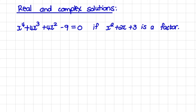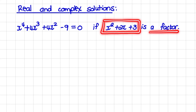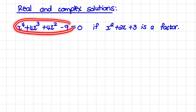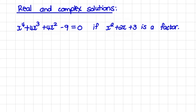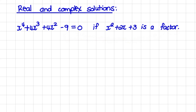We are going on with our series on complex numbers. In this video we are given an equation and we also have a trinomial as a factor to this equation. Now what it means is that if I divide this expression by the factor, that factor would divide exactly into this expression, meaning it will have a remainder of 0.